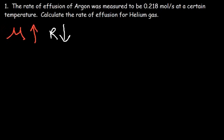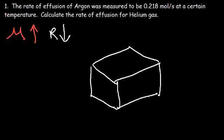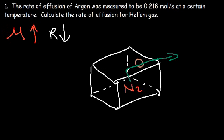This makes sense: heavy gas molecules move slower and lighter gas molecules move faster. Effusion has to do with how fast a gas can escape from a hole, or how fast it passes through a hole. So imagine a box with a gas inside and a hole in the box — say there's nitrogen gas inside. The rate at which nitrogen gas leaves through that hole is the rate of effusion.